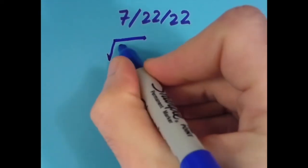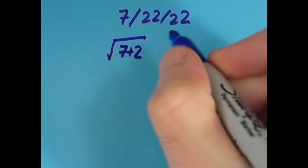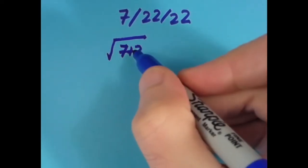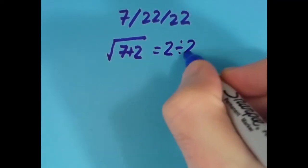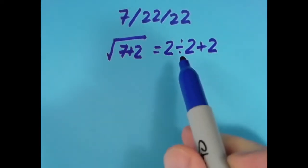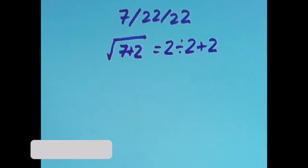So what I did was I said the square root of 7 plus 2, so 7 plus 2 is 9, the square root of 9 is 3, that's going to be equal to 2 divided by 2 plus 2. So 2 divided by 2 is 1 and 1 plus 2 is also 3.